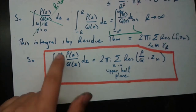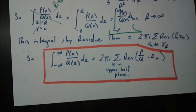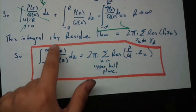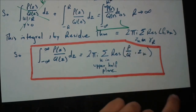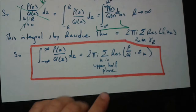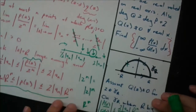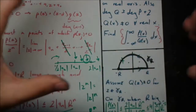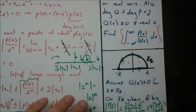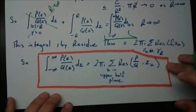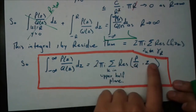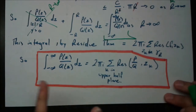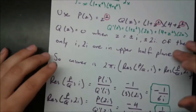Therefore, the integral from −∞ to +∞ of P(z)/Q(z) dz = 2πi × Σ Res(P/Q, z_k), where the z_k are isolated singularities in the upper half plane. As R → ∞, the semicircle becomes the entire upper half plane. You might wonder: the right side has i, yet the left side should be real — we'll see the cancellation in an example right now.